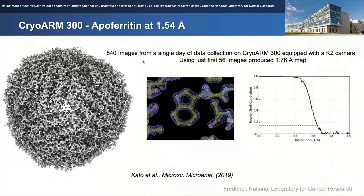While waiting for the cryo-arm 200 to be delivered and installed, there was a post on Twitter by Takayuki Kato reporting a very high-resolution structure of apoferritin from a cryo-arm 300. From the first 56 images alone, they got a 1.76 angstrom map, and when they added all data from about one day of collection — 840 images from just under 1,000 micrographs — they got a 1.54 angstrom structure. Back then, 1.5 angstroms of apoferritin was a groundbreaking result and the highest resolution ever achieved by a cryo-arm at that time.